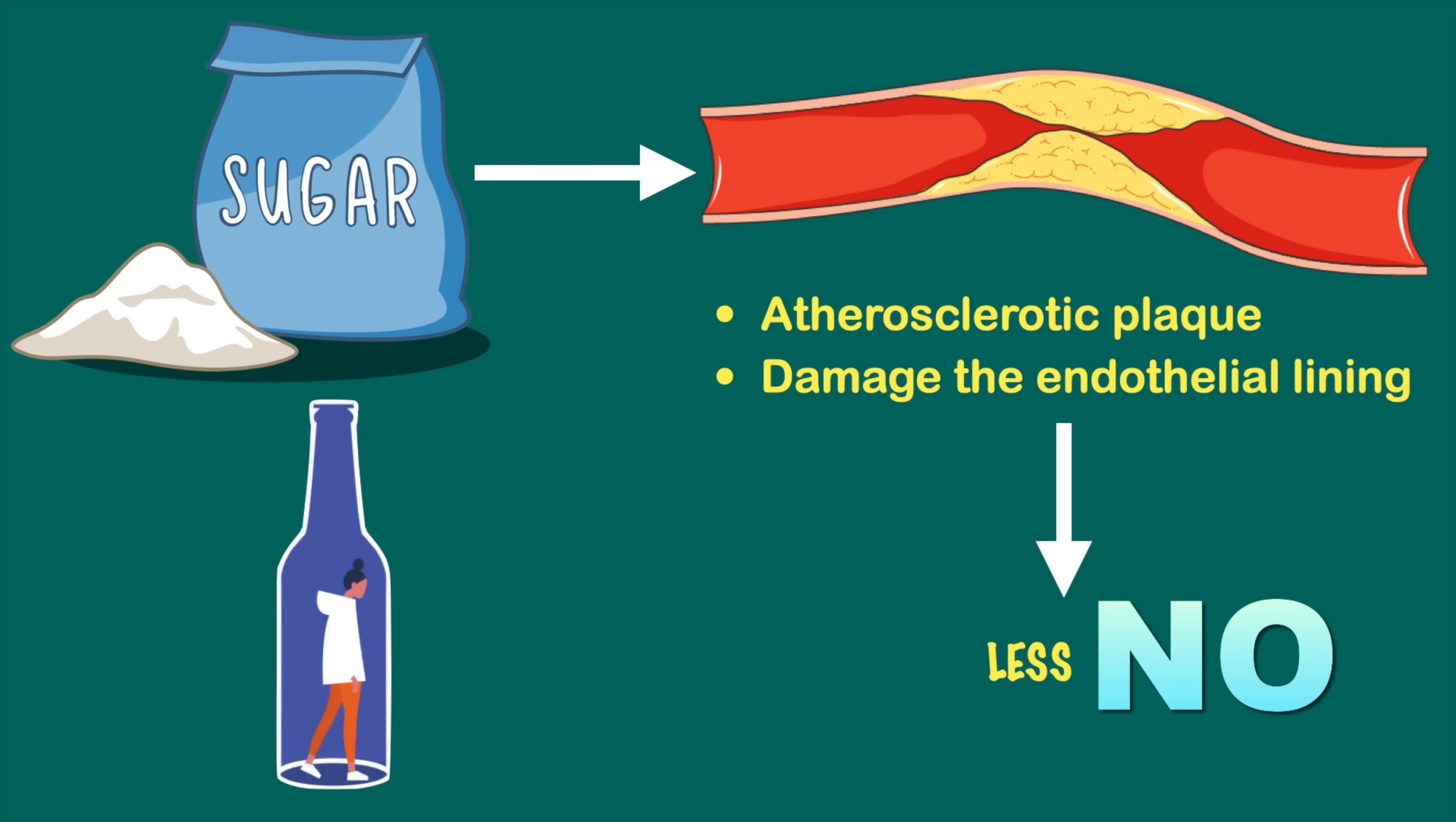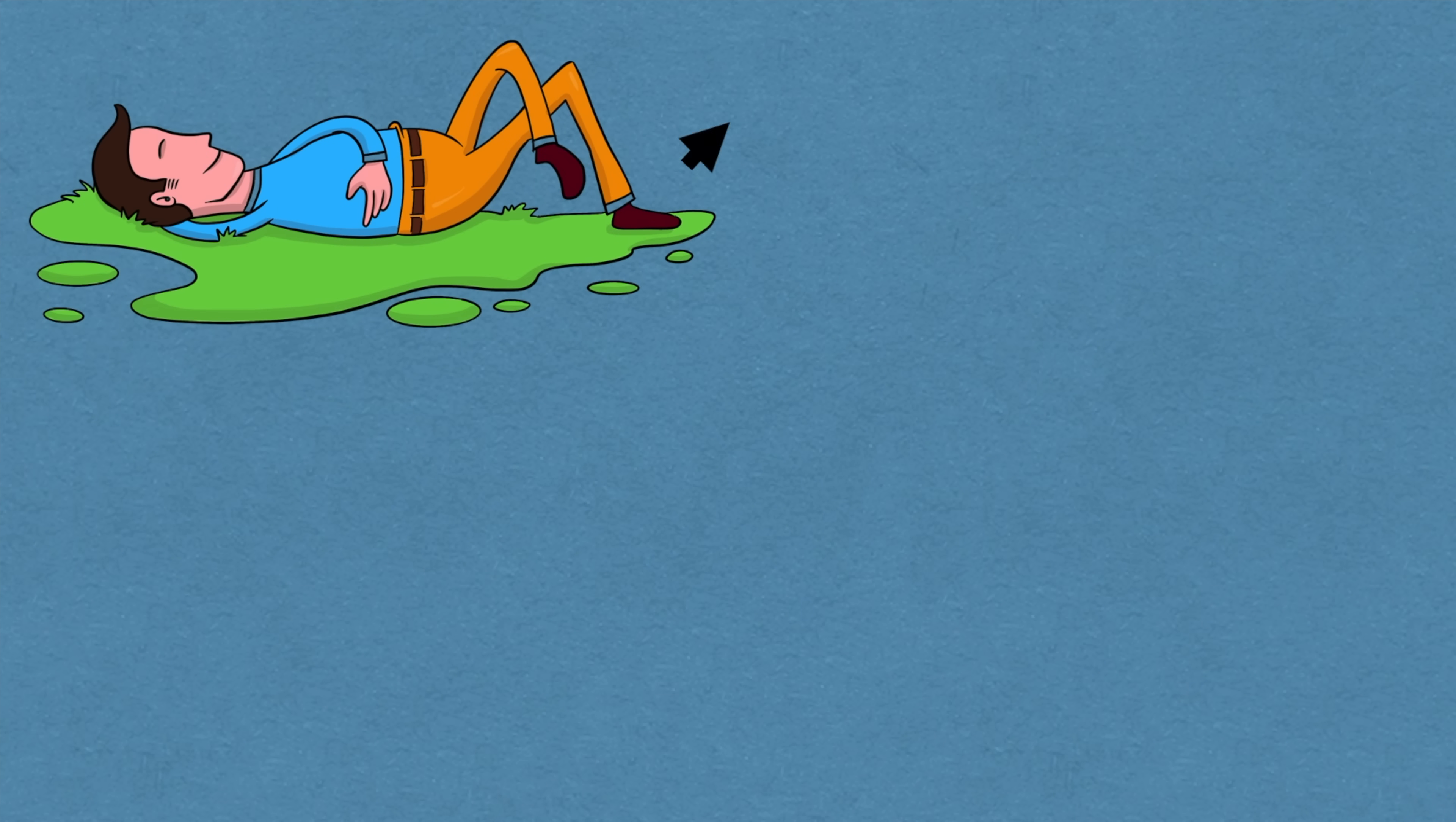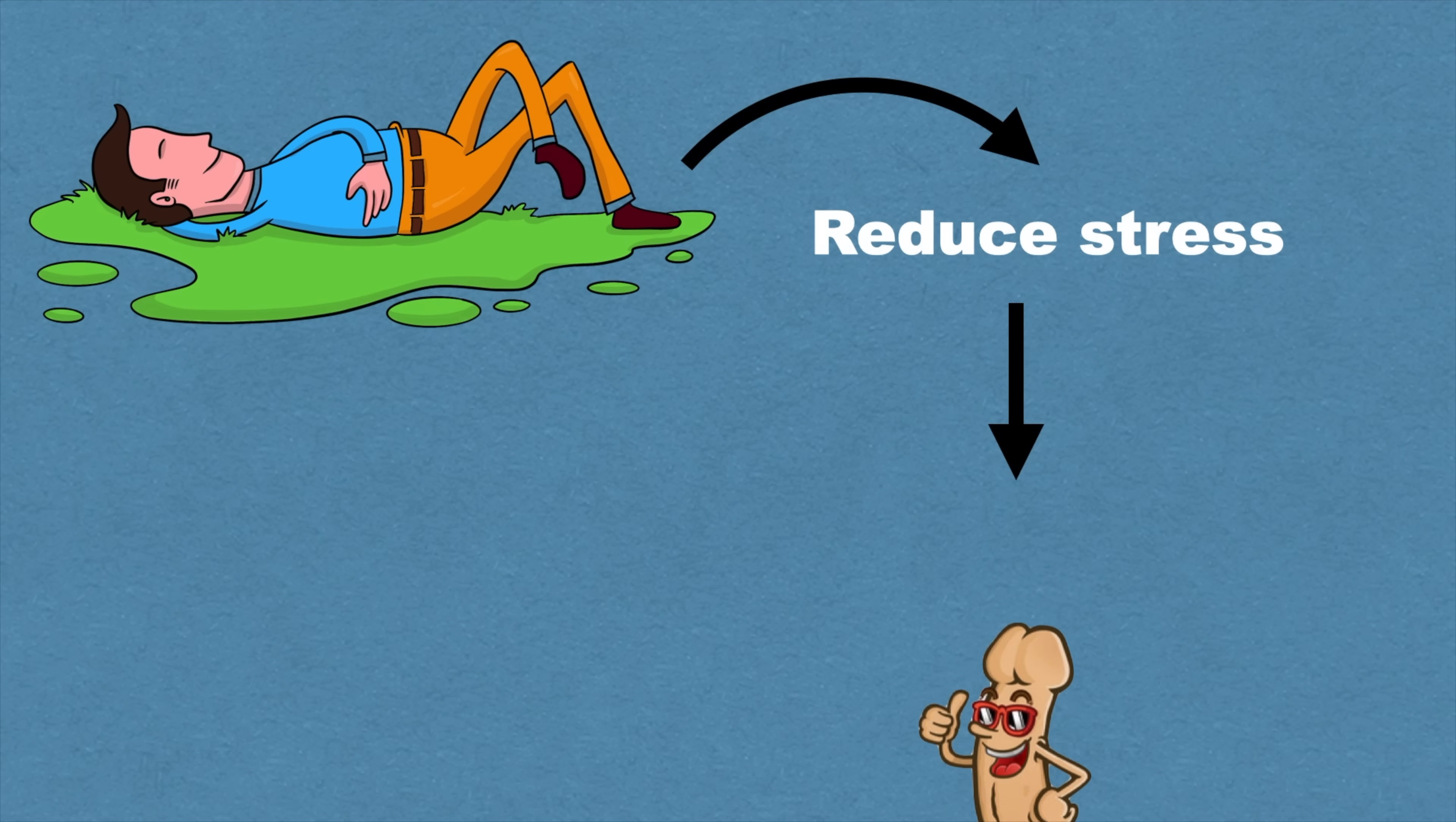Alcohol also reduces the level of nitric oxide in our body. And earlier we have already discussed about the stress and how it affects our body. Now the next thing you should improve is your sleep. A good sleep can reduce stress and improve erection.